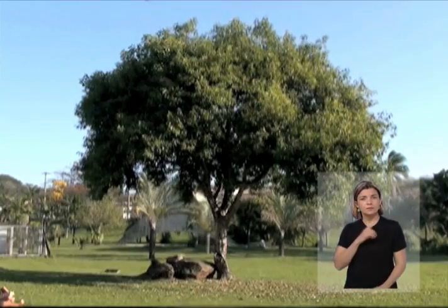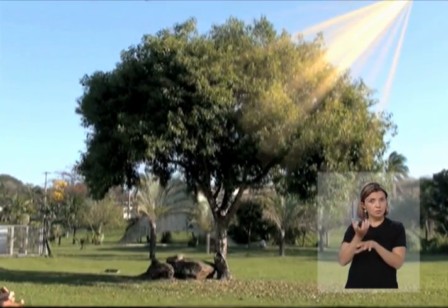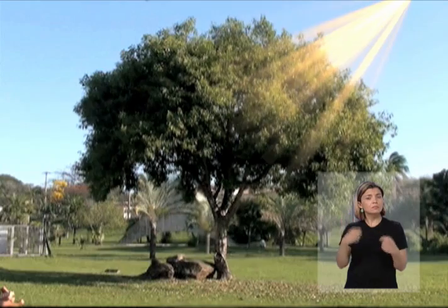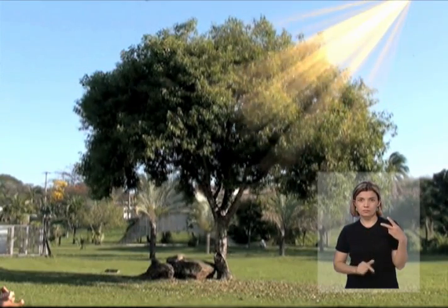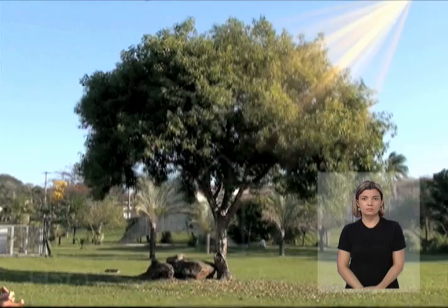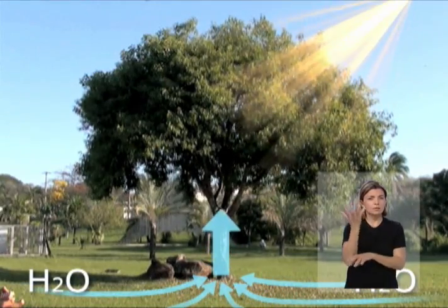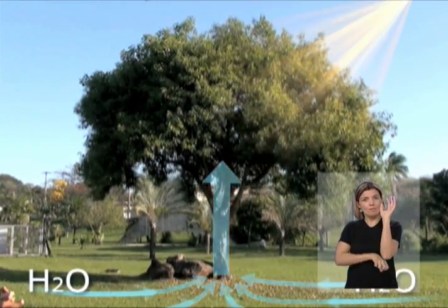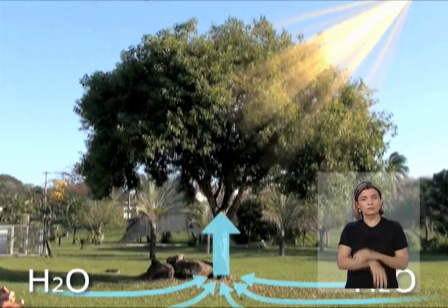Para a produção de moléculas orgânicas pela fotossíntese, além da luz do sol, há necessidade de água e de gás carbônico. As plantas captam a água pelas raízes, transportando-a até as folhas.